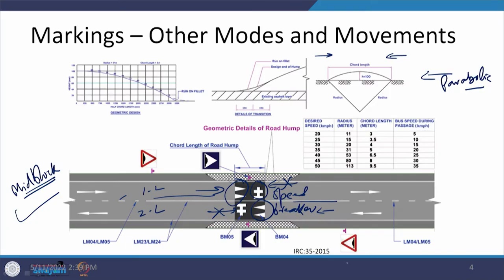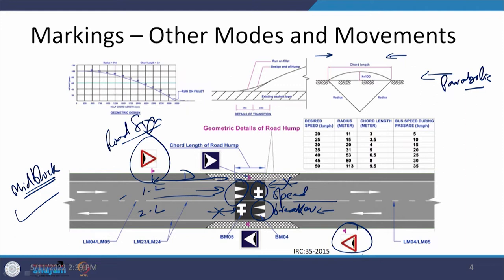When the speed breaker is provided, the driver needs to be warned that there is a speed breaker ahead. This is done by placement of a road sign at a certain distance D before the speed breaker. We are going to talk about road signs and their placement subsequently. At the moment we are just noting that this sign needs to be provided in both directions.